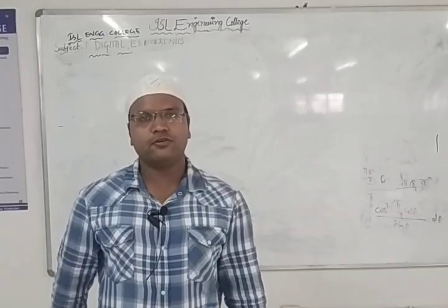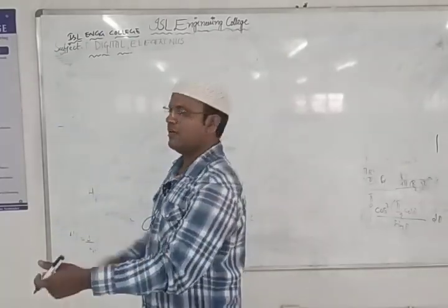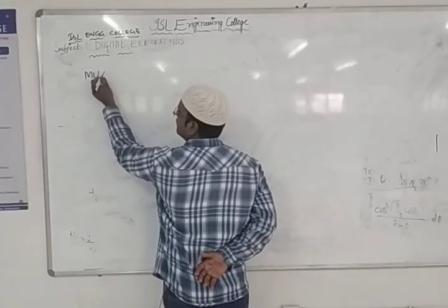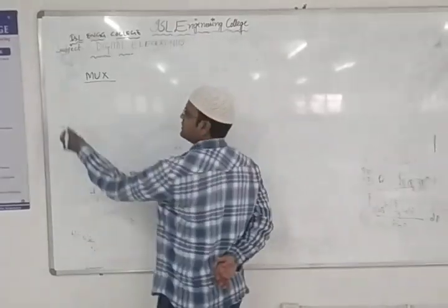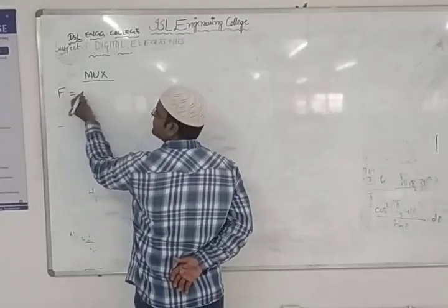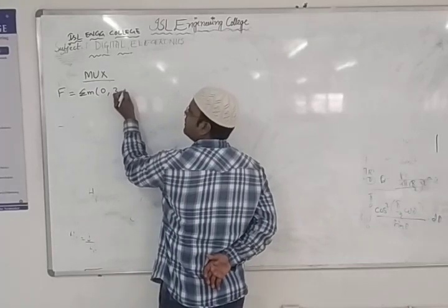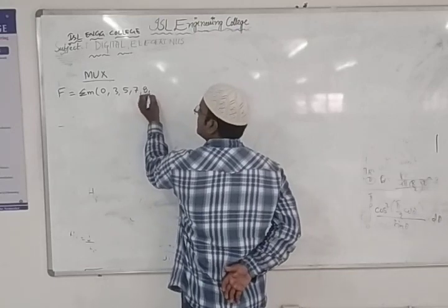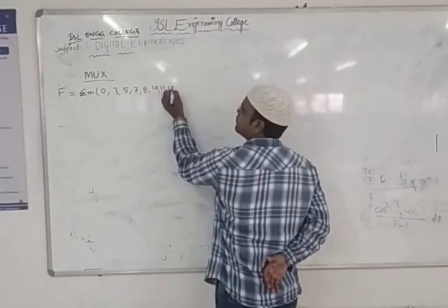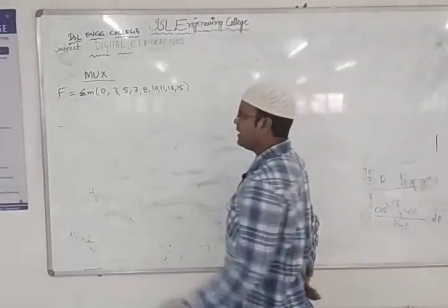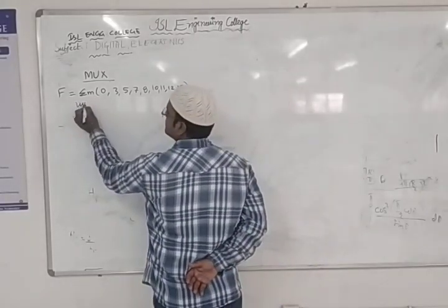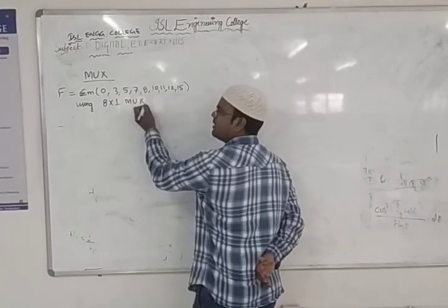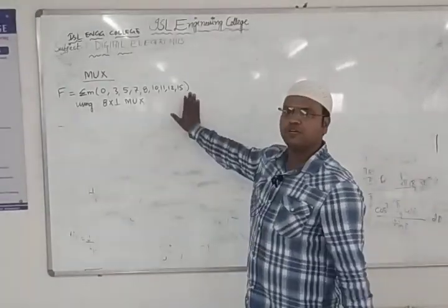Today's class first priority is multiplexer. We are going to learn how the multiplexer works using some problems. Suppose they gave a question: implement F = Σm(0, 3, 5, 7, 8, 10, 11, 12, 15) using an 8-to-1 multiplexer. So by using an 8-to-1 MUX, they asked us to solve this problem.